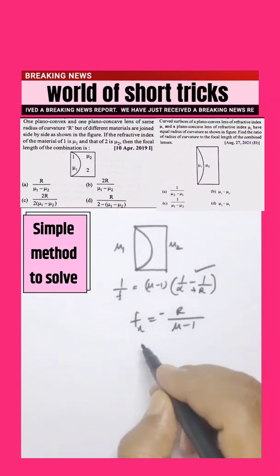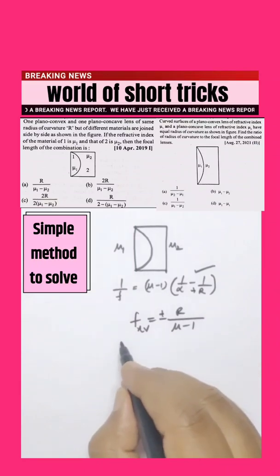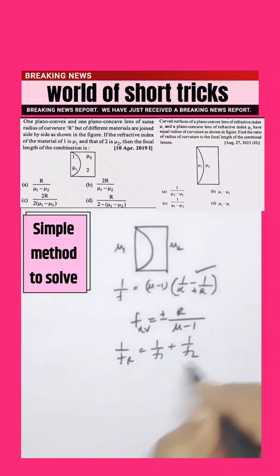If it is convex, it is minus, and if it is concave, it becomes plus. So plus r minus r by mu minus 1. What you have to do here is 1 by f resultant is 1 by f1 plus 1 by f2.